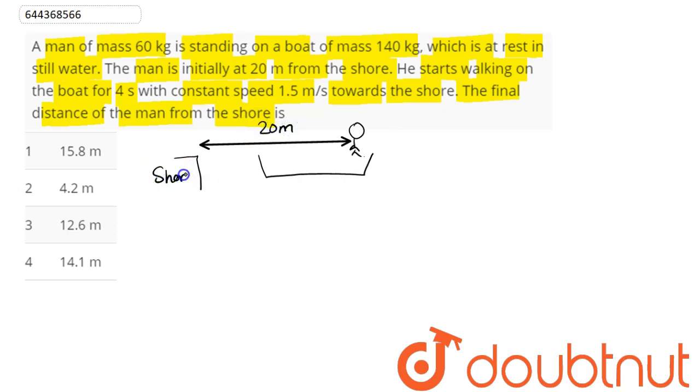Hence this is the shore. Now when this man starts walking on this boat for 4 seconds towards the shore, we have here this man walking with speed given as 1.5 meters per second towards the shore. So in time of 4 seconds, this man will be displaced at this position.